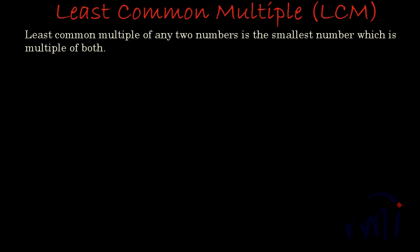Hi, so in this video we are going to learn about least common multiple or LCM and we are also going to learn how to find the LCM of two or more given numbers. As you can see, I have already noted down the definition of LCM. The definition says least common multiple of any two numbers is the smallest number which is multiple of both.